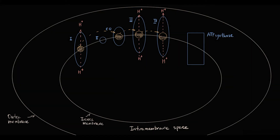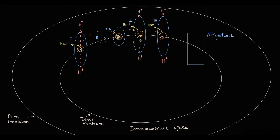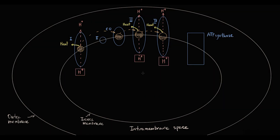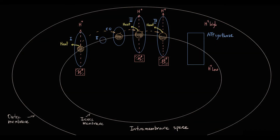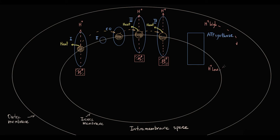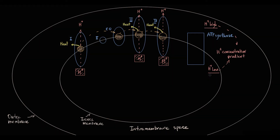50% of this energy is used to drive hydrogen protons from the mitochondrial matrix into the intermembrane space, and 50% of energy is generated as heat to maintain our body temperature. This hydrogen movement occurs at the level of complexes 1, 3, and 4. The major idea of this hydrogen transport is to lower proton concentration in the mitochondrial matrix and to increase hydrogen proton concentration in the intermembrane space.